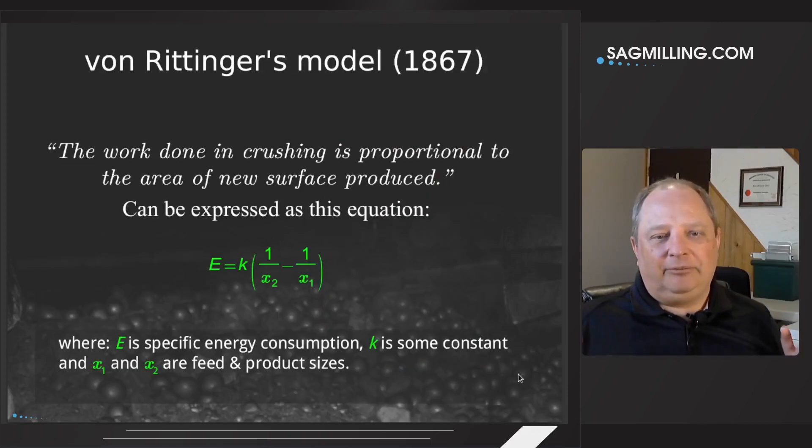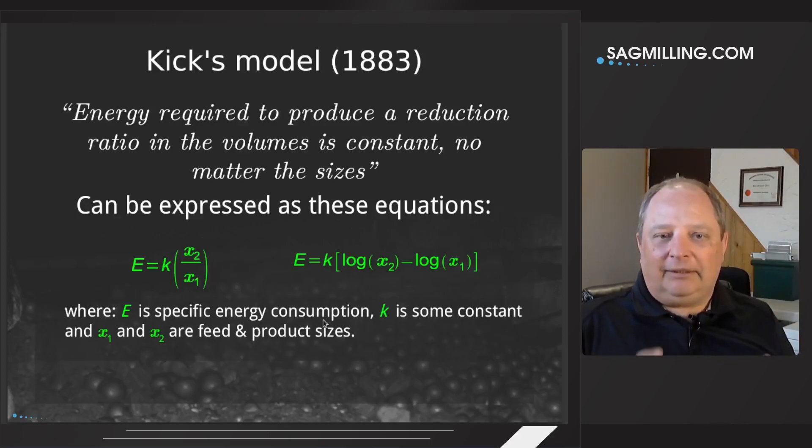So Von Rittinger's equations, they didn't actually start as equations. They were basically described as a narrative. A watered-down way to describe the narrative is that the work done in crushing, or grinding for our purposes, is proportional to the area of new surface produced. And if you want to attach an equation to that, you're going to get something that looks like this equation where the specific energy consumption is going to equal some constant times a term that describes the change in particle size. So x1, this is the feed size, and x2 would be the product size. So 1 over the product size minus 1 over the feed size.